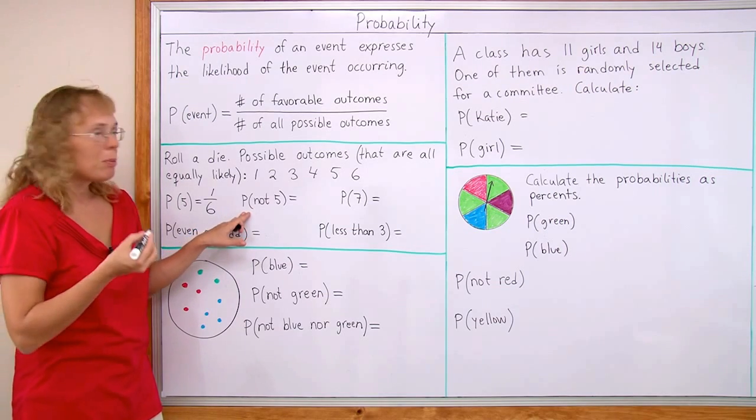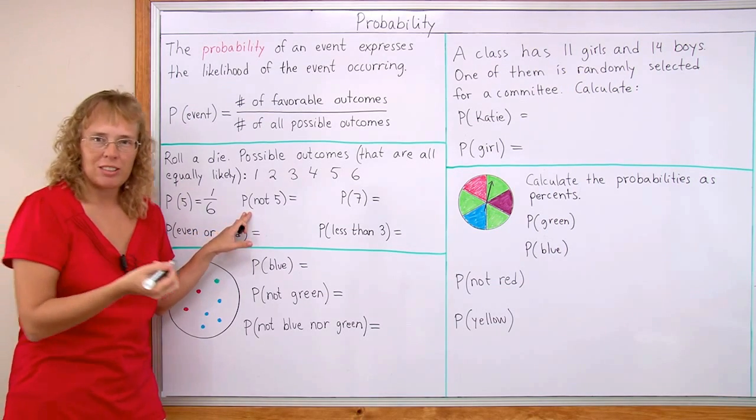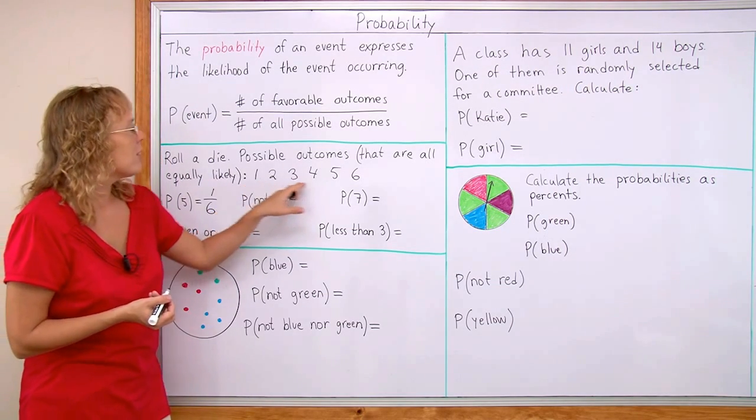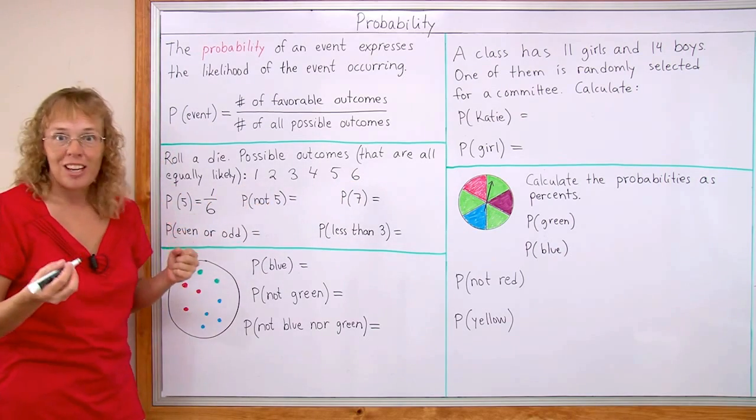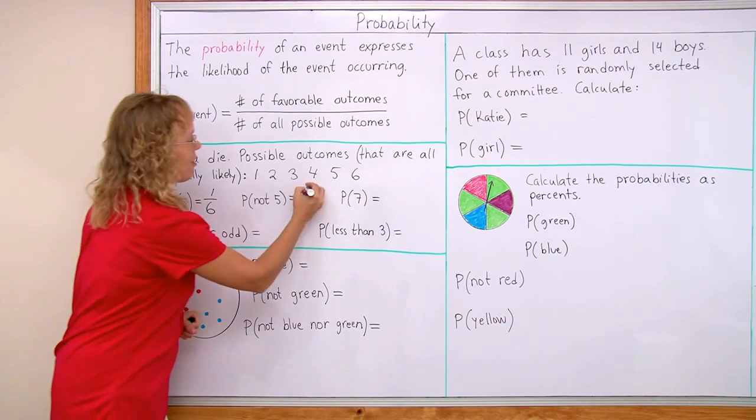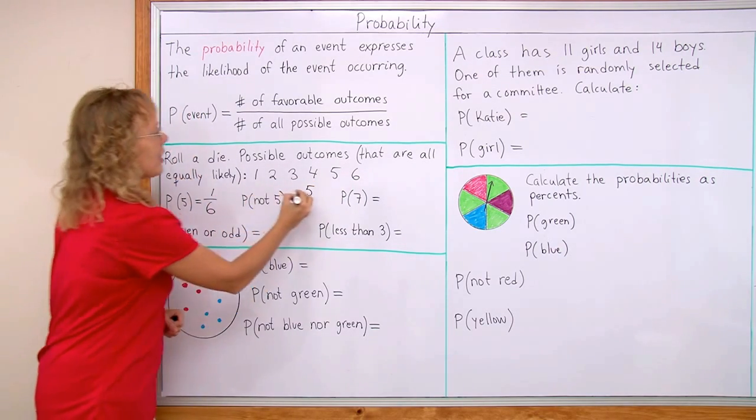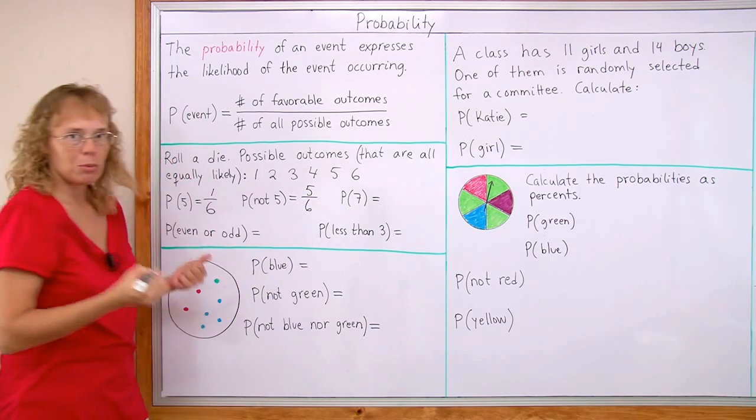Over here, the probability of this event that we don't get five. So we count here how many of these are not five, right? There's five of them that are not five and then six in total. Six possible outcomes.